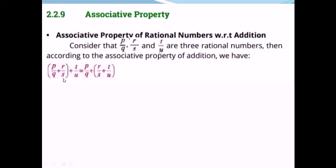On the left-hand side, the bracket encloses the first two rational numbers and the third comes after. On the right-hand side, the first number is written as-is and the bracket encloses the second and third rational numbers. So remember: if you have a bracket, solve that value first. You solve the left-hand side, call it answer one, then solve the right-hand side and compare — both answers should be the same.